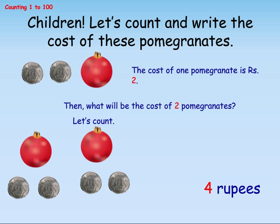Children, let's count and write the cost of these pomegranates. The cost of 1 pomegranate is rupee 2. Then what will be the cost of 2 pomegranates? Let's count first the total number of pomegranates. See, there are 2 pomegranates in the picture. As cost of 1 pomegranate is rupee 2, so the cost of 2 pomegranates will be rupee 4.